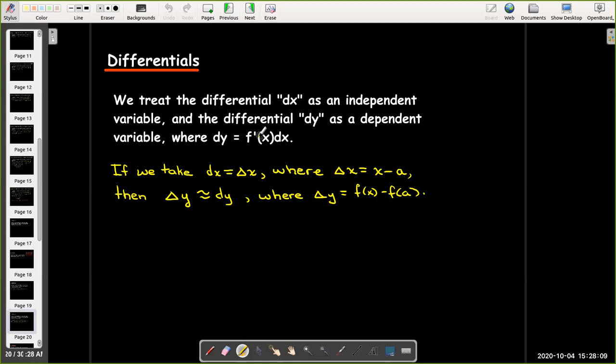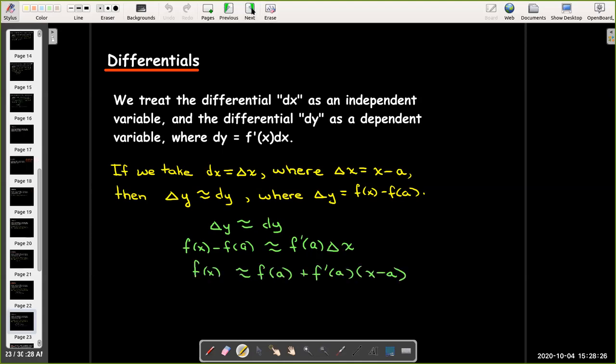And dy is defined as it is up here, f prime of x dx. So, if that's true, then we would have f of x minus f of A is about f prime at A times delta x. And we have the same linearization.